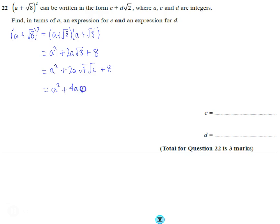So the d, the part with √2, is 4a. And the c is everything that doesn't have a √2 in it, so it's the a² and the plus 8. So the expression for c is a² plus 8.